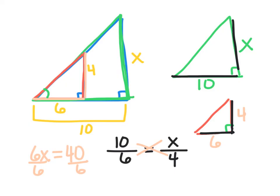And then I'm going to divide by 6. So 40 divided by 6, if I type that in, ends up being 6.6 repeating, or the fraction for that is 6 and 2 thirds. So that's how long side X is.